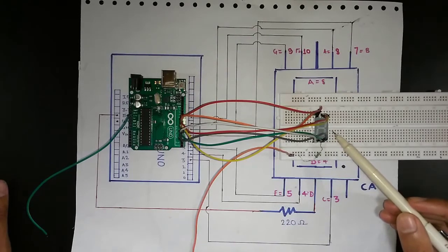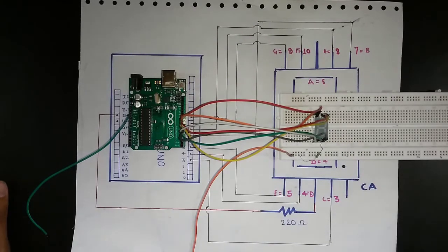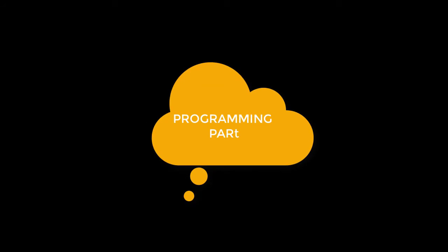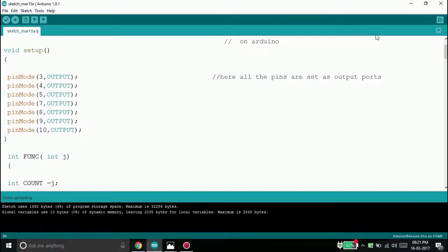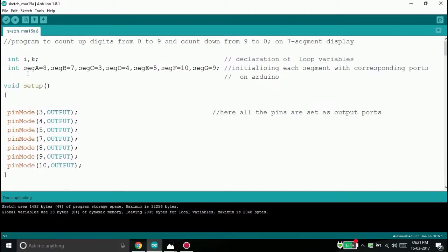Now let us glow this 7 segment display. Let us look at the program to count up digits from 0 to 9 and count down from 9 to 0 on 7 segment display.